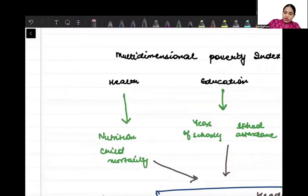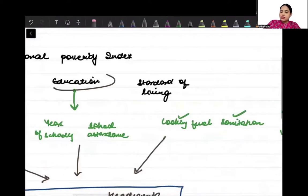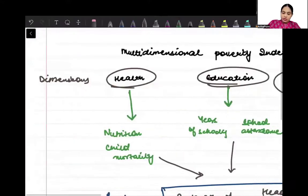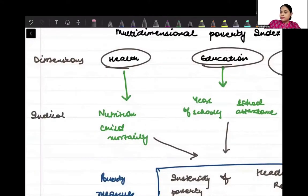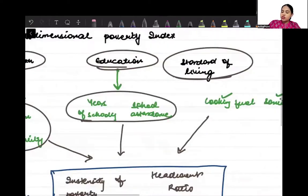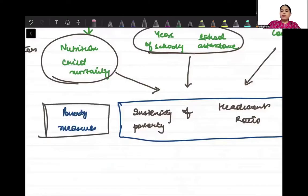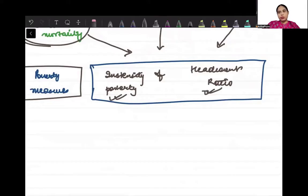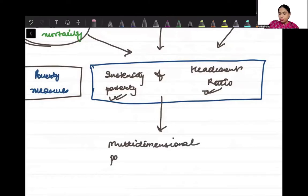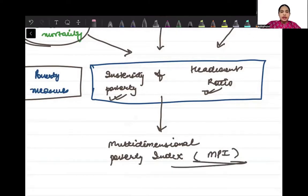So it's something like this. Basically these are our dimensions. There are three main dimensions: health, education, and standard of living. Then there are indicators. Health has two indicators, education has two indicators, and standard of living has six indicators. These indicators can help us give two different kinds of poverty measures: intensity of poverty and headcount ratio. These two poverty measures together can help us define what is called multidimensional poverty index, MPI. This is how you can go ahead and find the multidimensional poverty index.